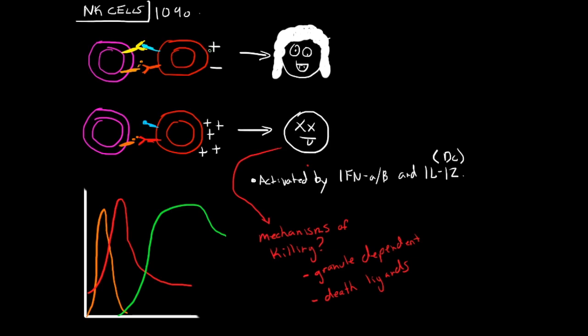Natural killer cells arise from the same progenitor cells as T cells, but they do not develop exclusively in the thymus. Remember how T cells develop as thymocytes in the thymus after being in the bone marrow — natural killer cells develop in the bone marrow.